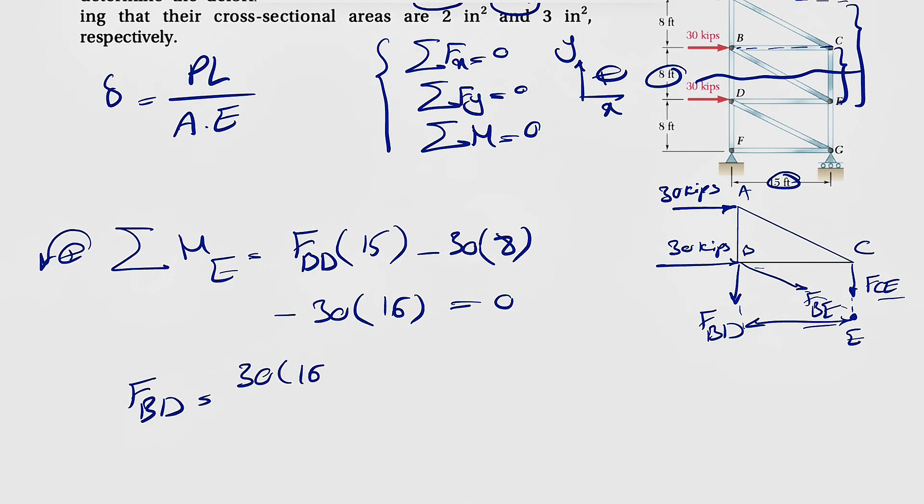We can factor 30 here. So 16 plus 8 over 15. This will give us 24. And that's going to give us 48 kips for the force in member BD.